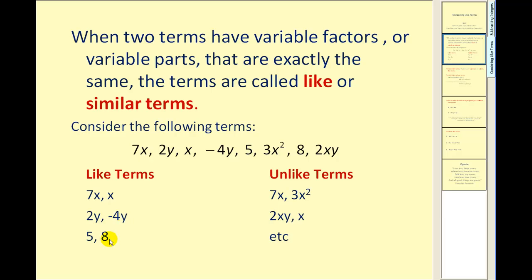5 and 8 are also considered like terms. Unlike terms would be terms like 7x and 3x squared. Notice that variable factors are not exactly the same. This one has x to the first power, this one has x to the second.